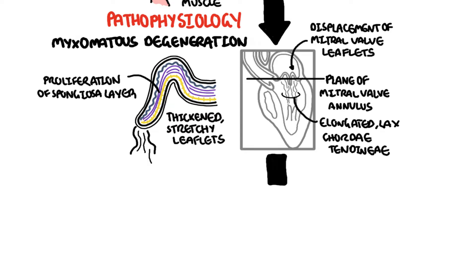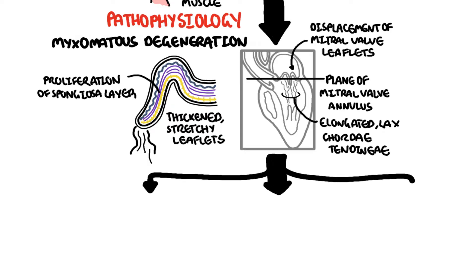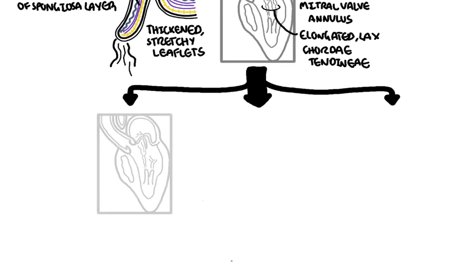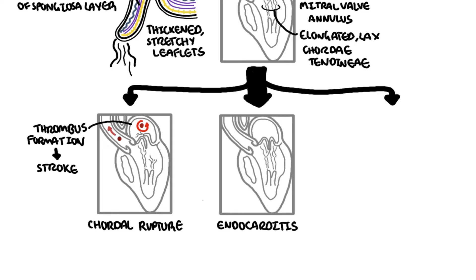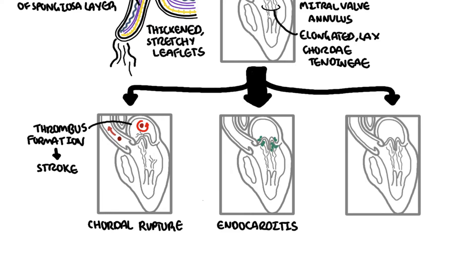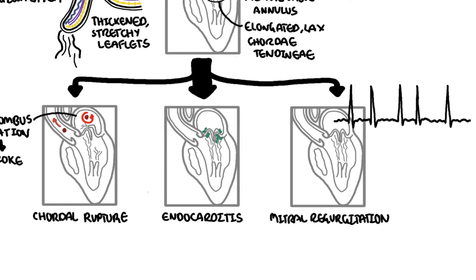This can cause a number of complications. Complications of mitral valve prolapse include chordal rupture — the chordae tendineae rupturing. It can cause stagnation within the area, so a thrombus can form, which if it becomes embolic can cause a stroke. Other complications include endocarditis, progression to severe mitral regurgitation, arrhythmias including atrial fibrillation, and in the worst cases, sudden death or cardiac neurosis.